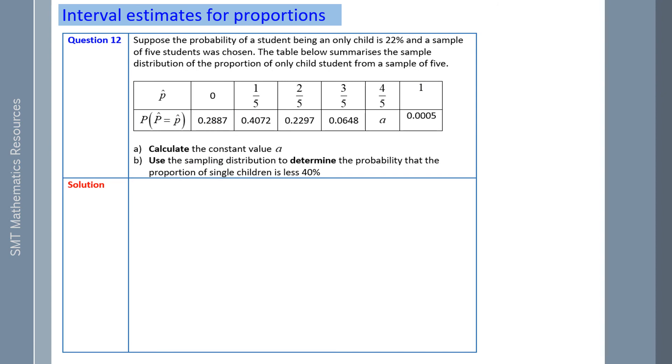Suppose the probability of a student being an only child is 22% and a sample of five students was chosen. The table below summarizes the sample distribution for the proportion of only child students from a sample of five. As you're a sample of five, you could have zero to five successes out of five. Now the table here has the probabilities worked out, but we just need to figure out A.